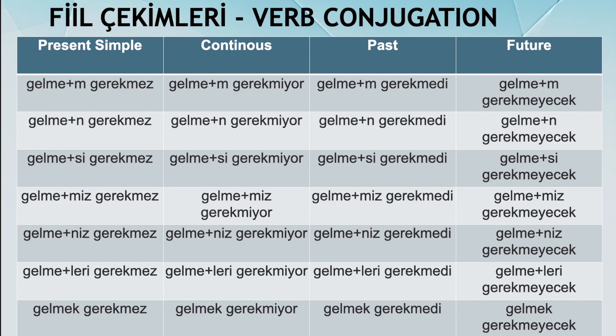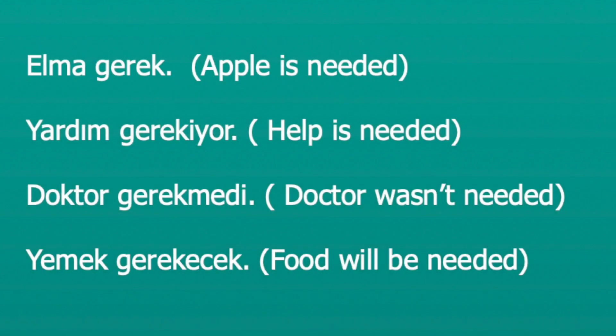Before I go, one more note. We talked about the form 'I need something, he needs something, they will need something.' But there is also the form 'something is needed' — that's the passive form in English. But in Turkish, you just use a noun and then the verb gerekmek, conjugated according to tense. And if you want the negative form, you add me as you already learned.